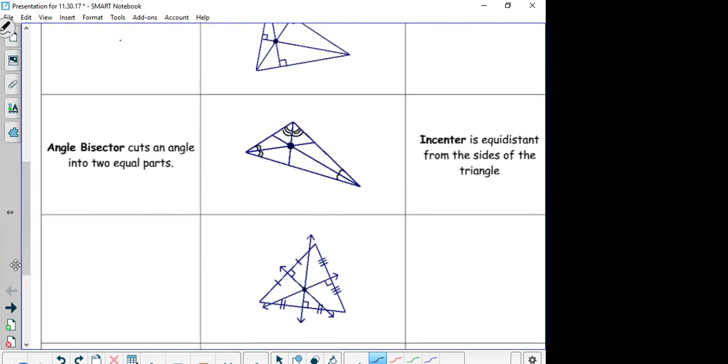Another word we learned is the angle bisector. It cuts an angle into two equal parts. In a triangle, we have three angle bisectors. We have an angle bisector here, we have an angle bisector here in green, and we have an angle bisector here in blue. The point where all three angle bisectors meet is called an incenter. That's the black dot.